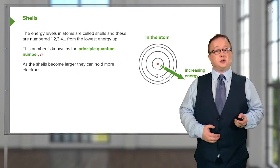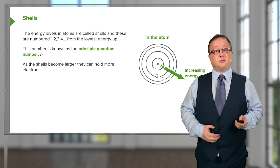If we move one shell away, it has the quantum number two, then three, and then four.